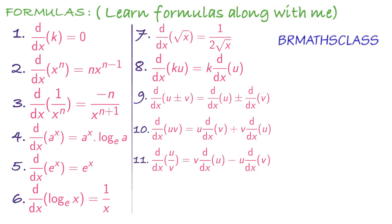Last formula in this video: d by dx of u by v, which is also known as the quotient rule. d by dx of u by v is v into derivative of u minus u into derivative of v, whole divided by v square. Students often get confused remembering this formula, but it is easy — remember that d by dx of u by v starts with v: v into derivative of u minus u into derivative of v, divided by v square.